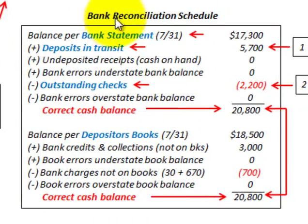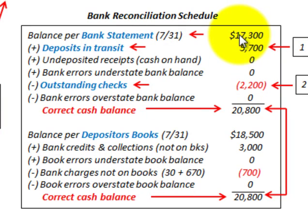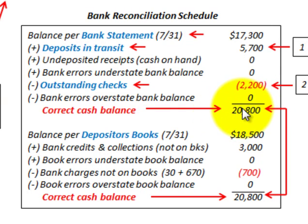Let's go down and look at our bank reconciliation schedule. We've got two ways we can look at this bank reconciliation. The first is through the bank statement — the balance per the bank statement. The company has a certain cash amount based on the bank statement, and what we have to determine is the correct cash balance for the company, because the bank statement doesn't include some items that have to be added and subtracted to come up with the correct cash balance.